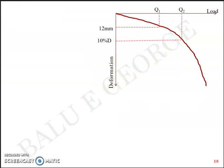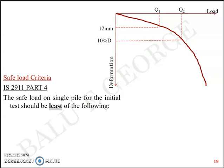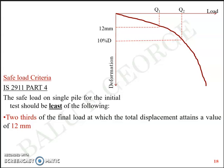Once the test is completed you'll get a load versus deformation plot. The deformation is measured from the dial gauge and the load is taken from the hydraulic system gauge. From that load versus deformation plot, Indian Standard IS 2911 Part 4 — which gives the safe load criteria for pile load tests — has some stipulations. The safe load on a single pile for the initial test is the least of the following. First: two-thirds of the final load at which the total displacement attains a value of 12 millimeters — from the plot you find the load corresponding to 12 mm displacement (Q1) and take two-thirds of that value.